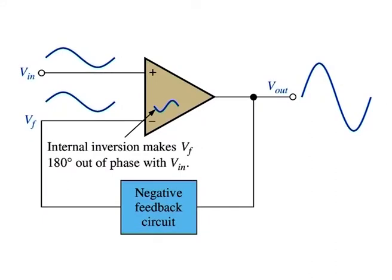After completing this section, you should be able to explain negative feedback in op-amps, discuss why negative feedback is used, and finally describe the effects of negative feedback on certain op-amp parameters. This figure here illustrates the negative feedback. The inverting input effectively makes the feedback signal 180 degrees out of phase with the input signal.